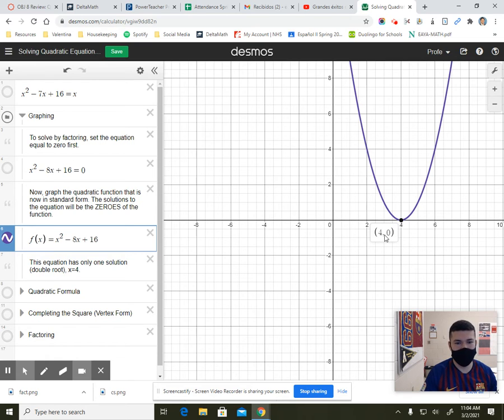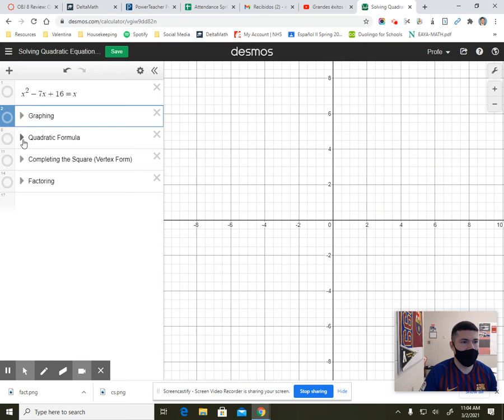So this has a zero at x equals 4. That is the solution. Now, one reminder, if you only have one root, then you call this a double root. So this is a double root of x equals 4. That's how you solve by graphing.